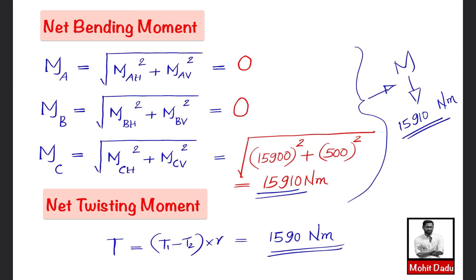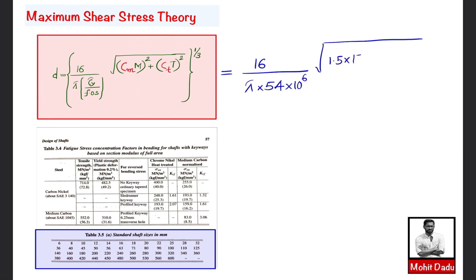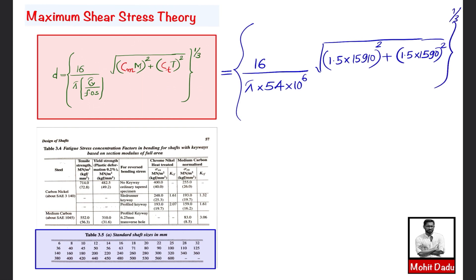Substituting into the maximum shear stress equation: d = (16 / (π × 54 × 10⁶)) × √((1.5 × 15910)² + (1.5 × 1590)²), raised to 1/3. Solving gives d ≈ 0.131 meters, or 131 mm.